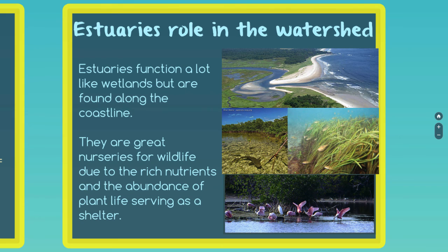Estuaries' roles in a watershed function very similarly to a wetland, except they're found along a coast and they have salty brackish water. Estuaries are great nurseries for wildlife due to the rich nutrients and abundance of plant life found there, and they help shelter animals from the dangers of the ocean. A lot of animals depend on estuaries to breed and reproduce. Where a river meets the ocean you might find sharks using it as a nursery, lots of fish using it as a nursery, and lots of birds using it as a nursery and refuge from the elements.